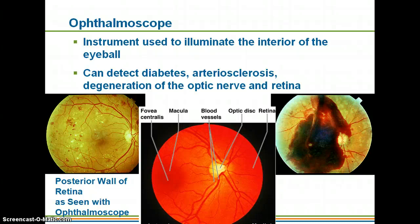In our last set of notes, we finished up talking about the layers and structures that make up the eye. So before we go into vision and how we actually detect what we see, this is something that an ophthalmologist is going to use — what they see with an ophthalmoscope when looking at the posterior wall of the retina.